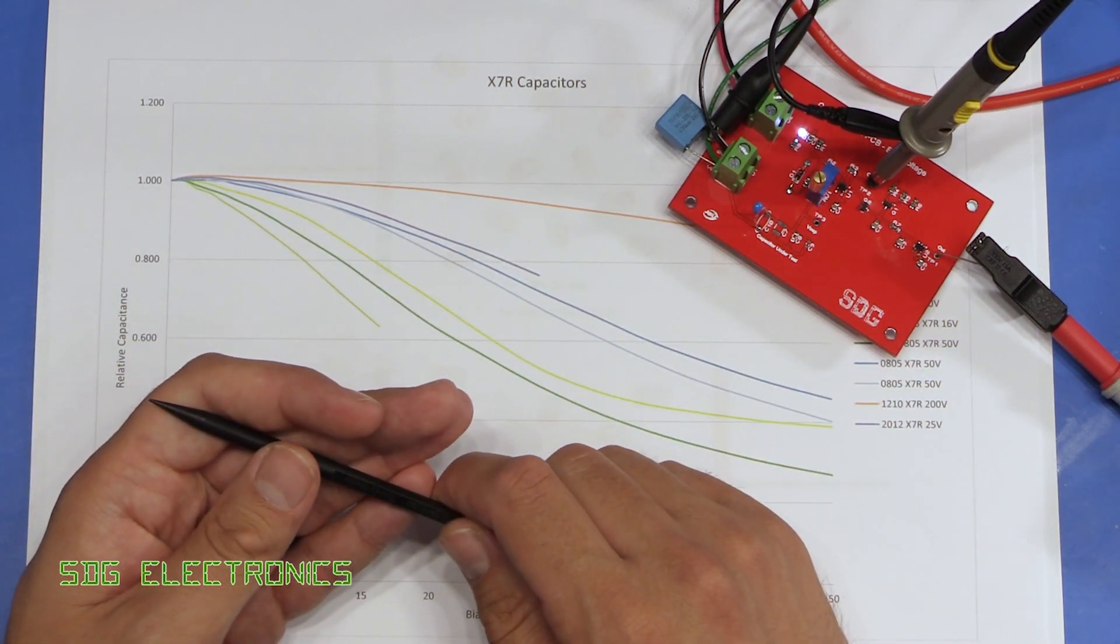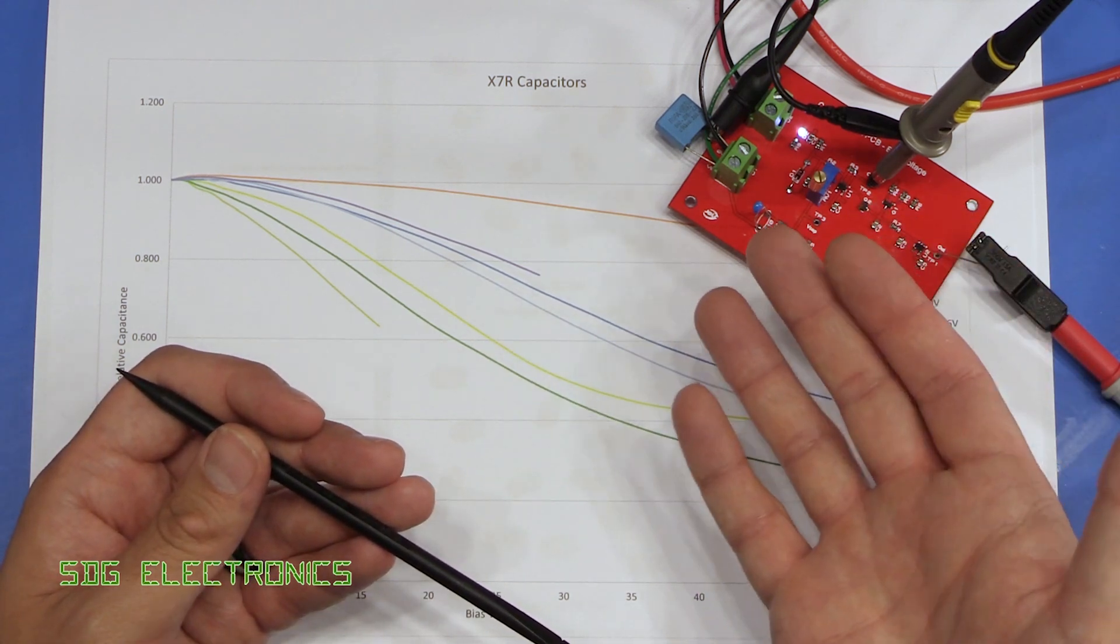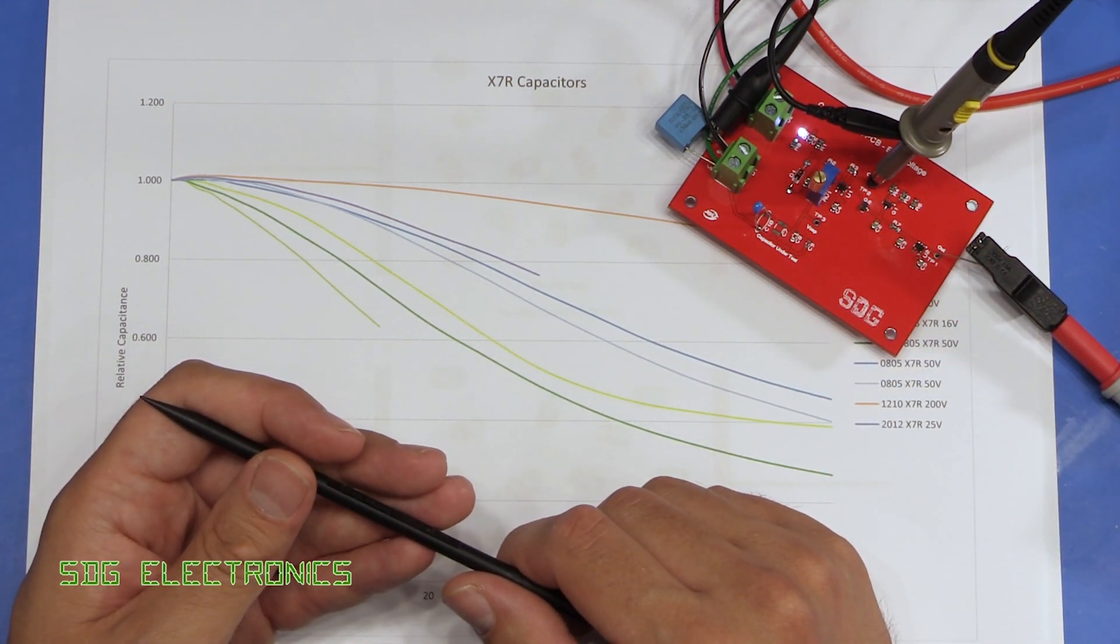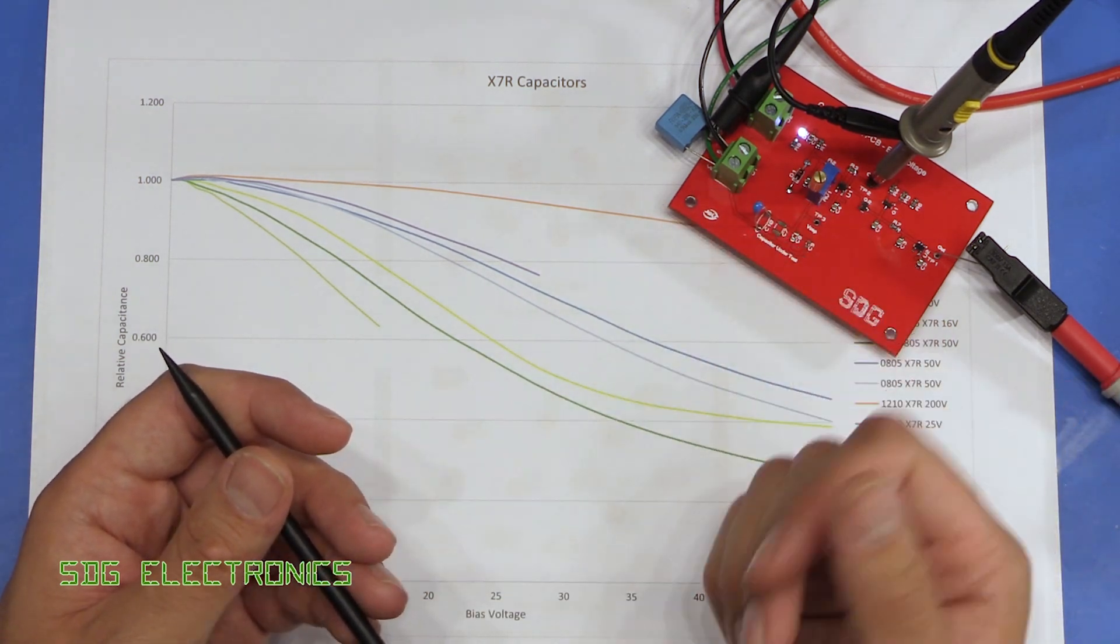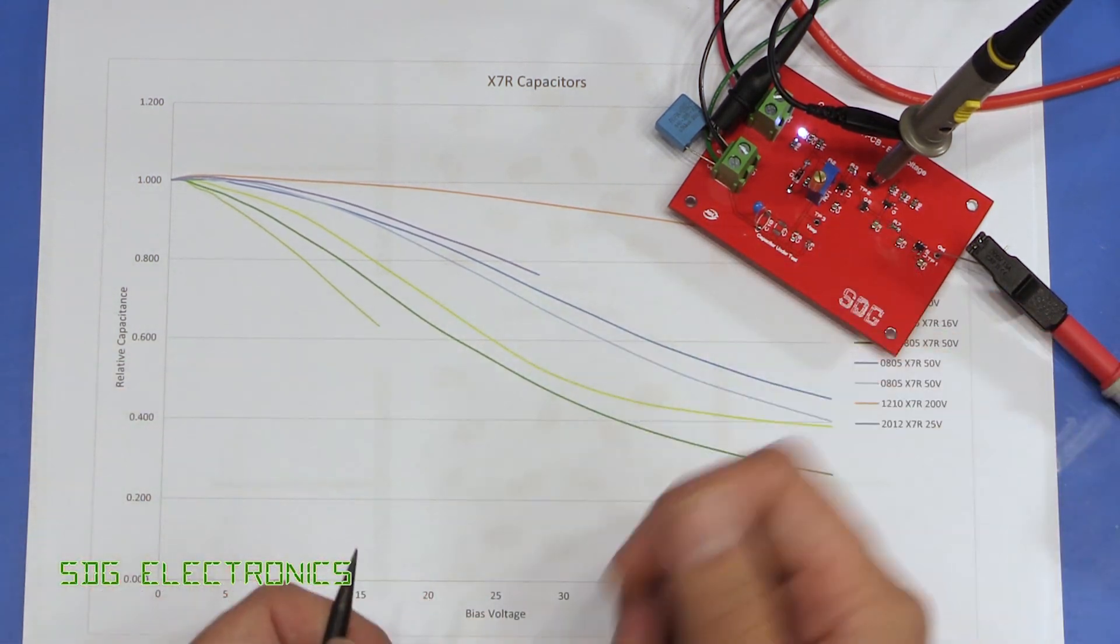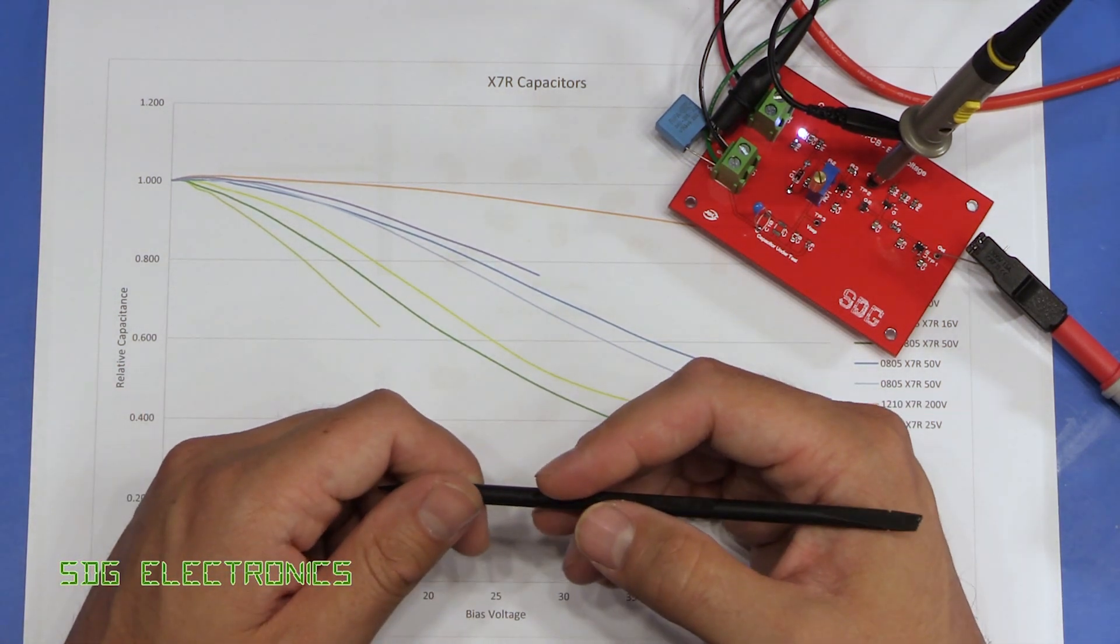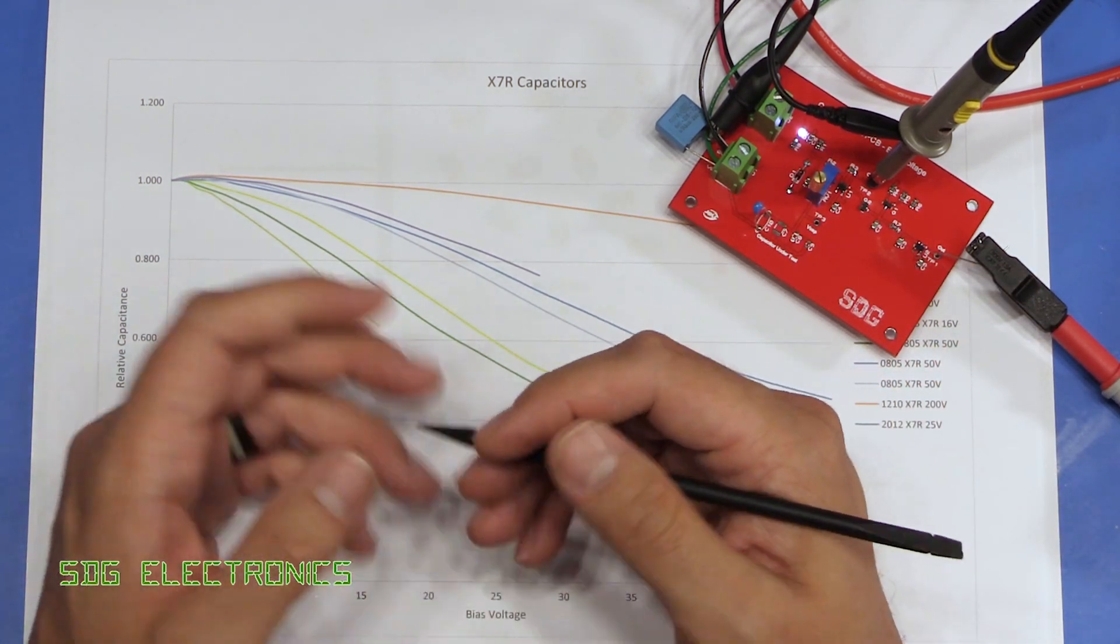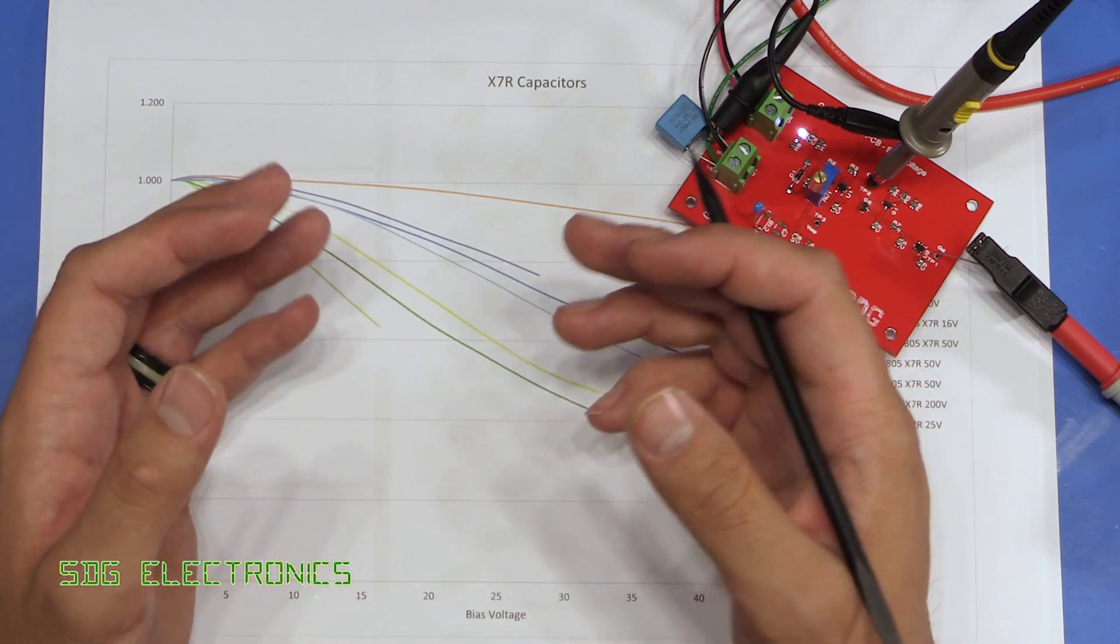So this would be particularly useful for things like switch mode power supplies where you're really relying on the capacitance value to keep your circuit stable. So you might want to design something like this and then give a few different types of capacitor a test. So I hope you found that useful. Leave any comments or thoughts or your experiences down in the comments below, but until next time, thanks for watching.